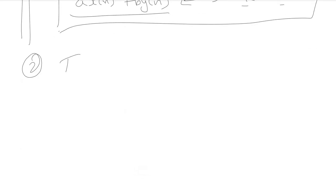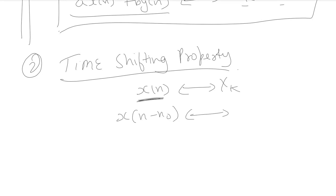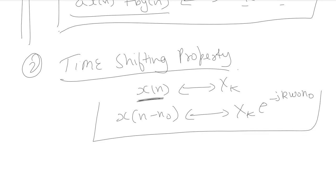Moving on to the second property: the time shifting property. If x[n] is any periodic signal with corresponding coefficient x[k], and we shift the time of this signal by n₀ units, the corresponding Fourier series coefficient will be x[k] multiplied by e raised to the power of minus j·k·ω₀·n₀. This is the time shifting property of discrete time Fourier series.